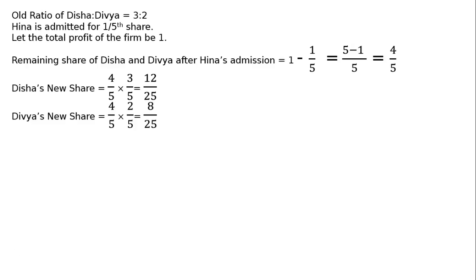Dibya's new share is 4 upon 5 multiplied by 2 upon 5. This 4 upon 5 will be shared among Disha and Dibya in the ratio of 3 to 2. Hence, Dibya's new share is 8 upon 25. Hina's new share is 1 upon 5 multiplied by 5 upon 5, that is 5 upon 25 to equalize the denominator.